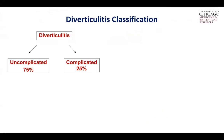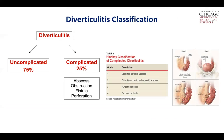As we all know, diverticulitis is classified into two buckets: uncomplicated disease, which is 75% of patients, really defined as just inflammation, and complicated disease, which is a quarter of patients, defined as abscess, obstruction, fistula, or perforation. There is a Hinchey classification which grades the severity of disease — four being feculent peritonitis, three being purulent peritonitis, and one being just a pericolic abscess.